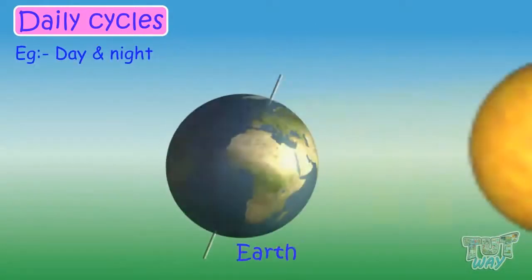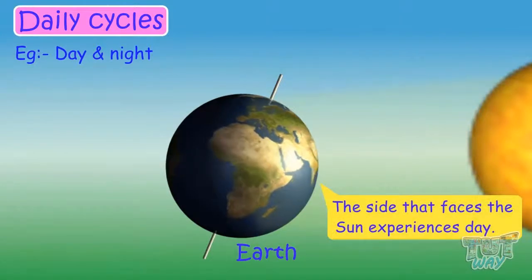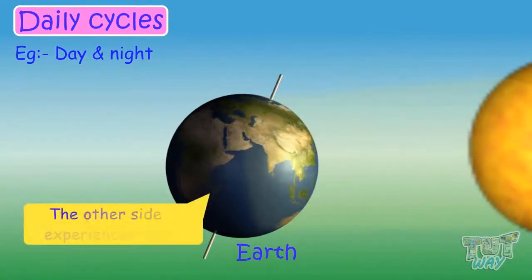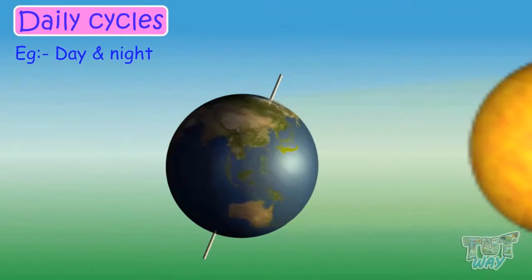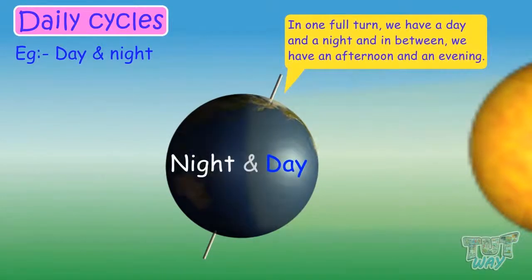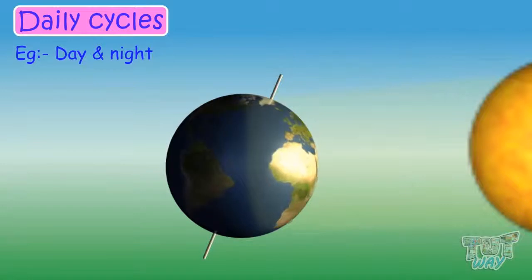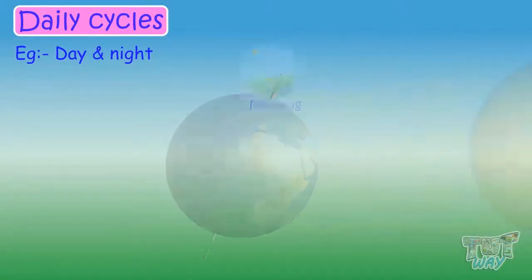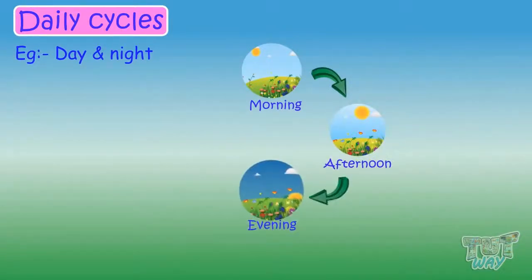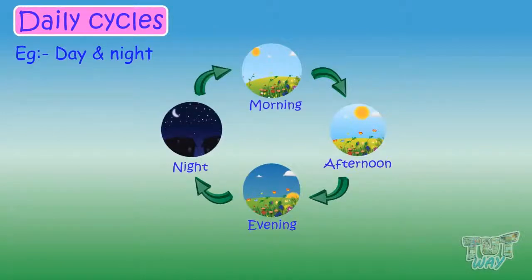As while rotating, the side which faces the sun experiences daytime, and the other side experiences the night. In one full turn, we have a day and a night, and in between we have afternoon and evening. As the Earth rotates, the amount of light reaching any particular place changes, and that gradual change causes morning to afternoon, afternoon to evening, and eventually night. And then again, the gradual change in position causes night to morning, morning to afternoon, afternoon to evening, and eventually night. And so on — this cycle goes on.